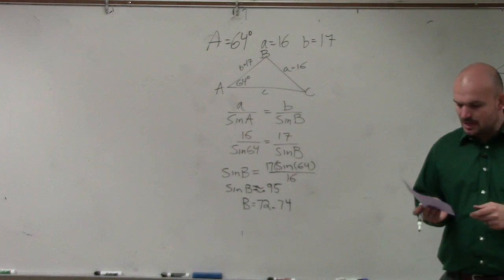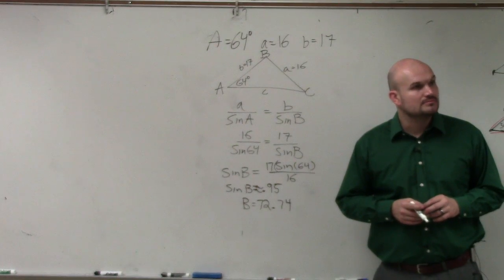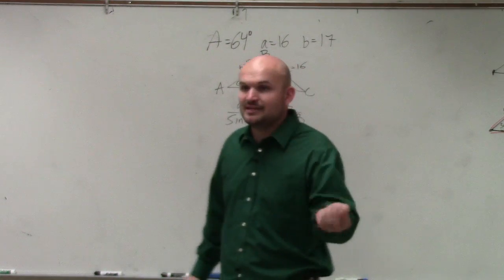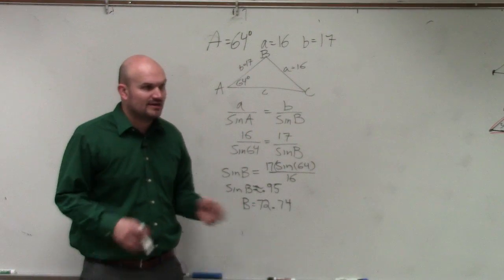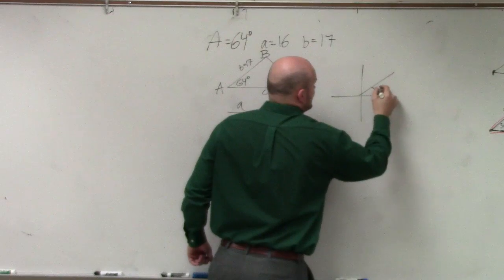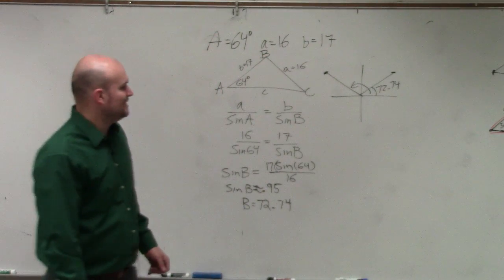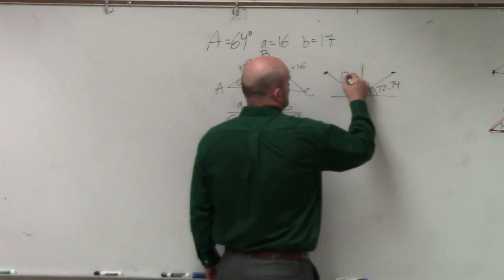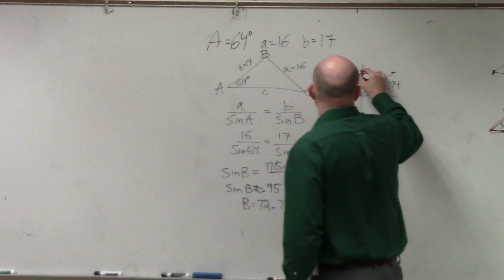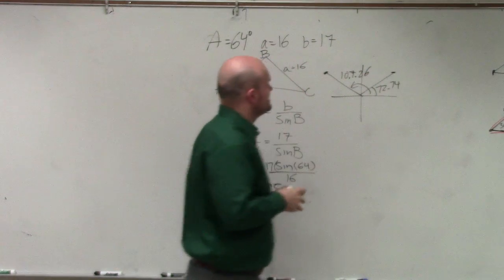So if you guys take a look at this, does everybody agree with me, understand how I got b equals 72.74? But remember, is that the only angle where sine of b is equal to 0.95? No, that's the only angle that's in the first quadrant, correct? Here, 72.74. But there's another angle over here, which is going to be 180 minus that, which would be 107.26.